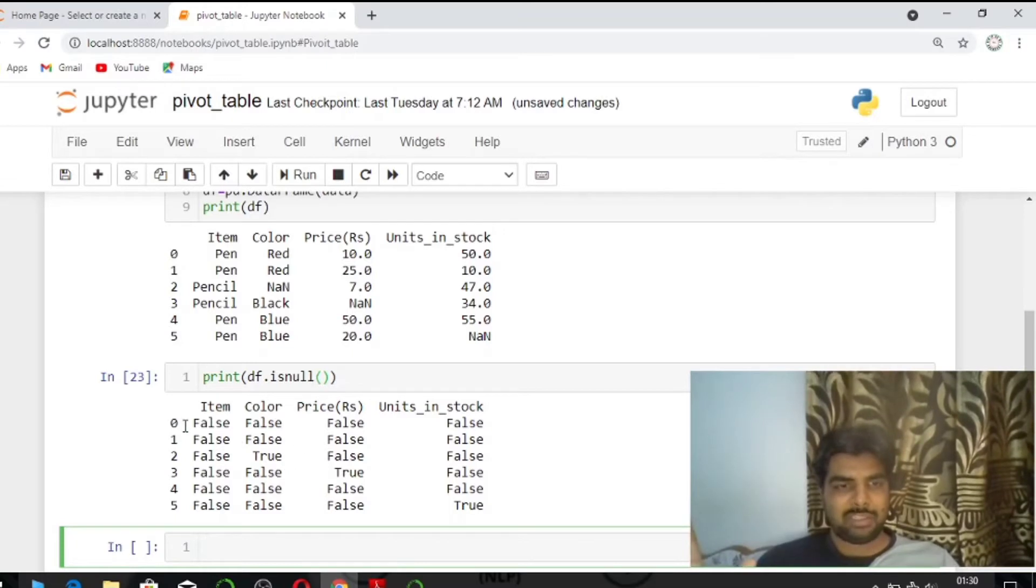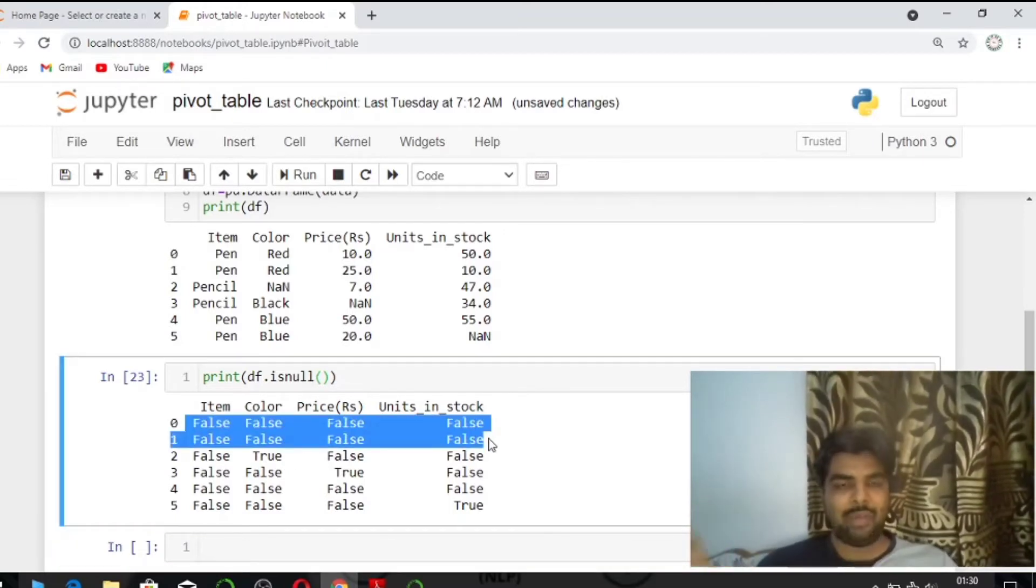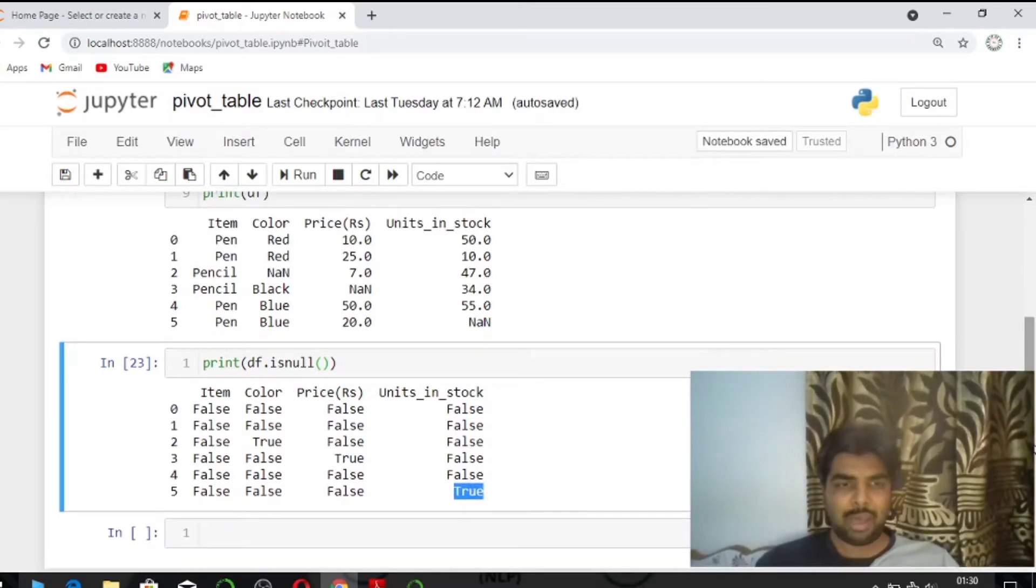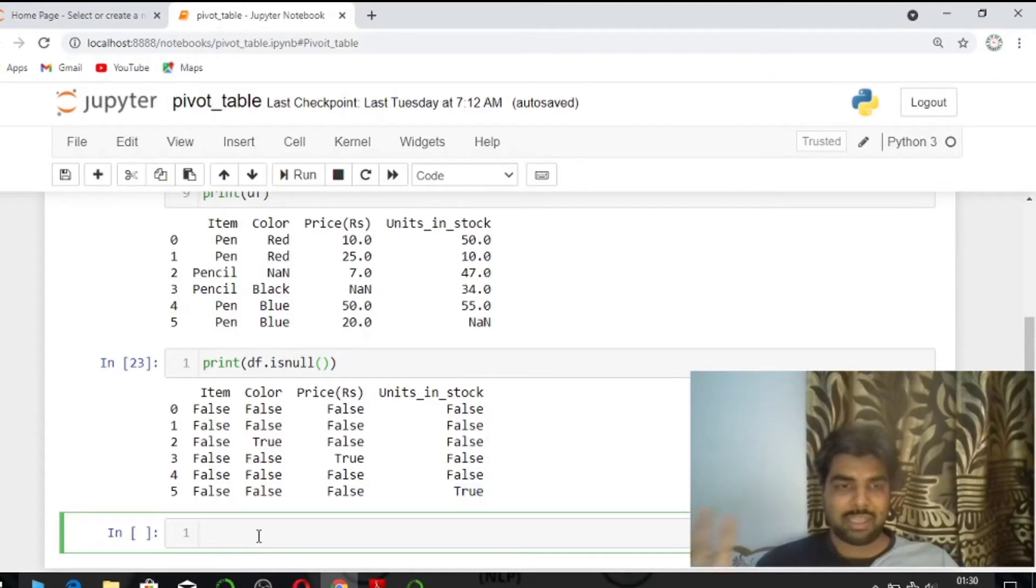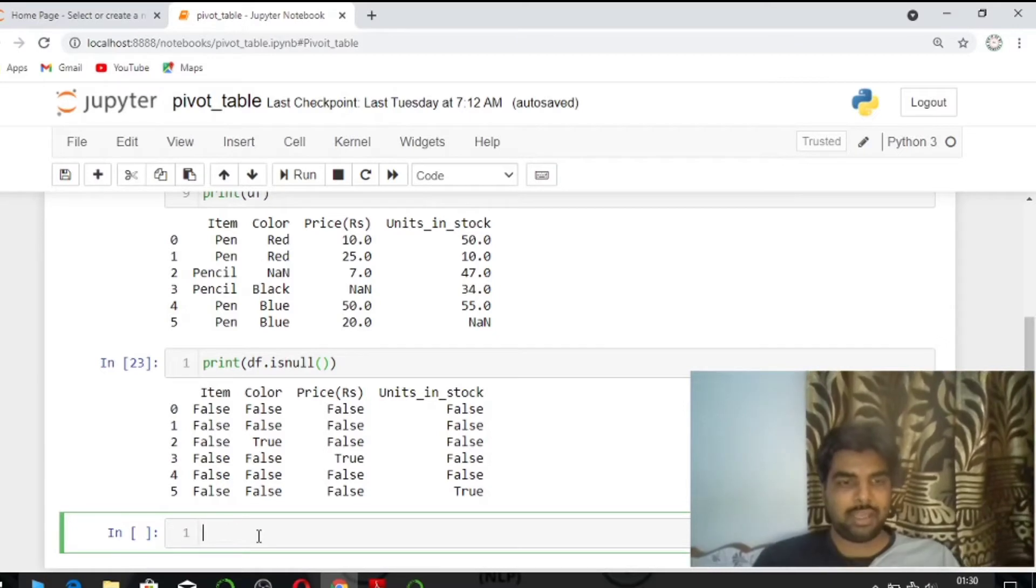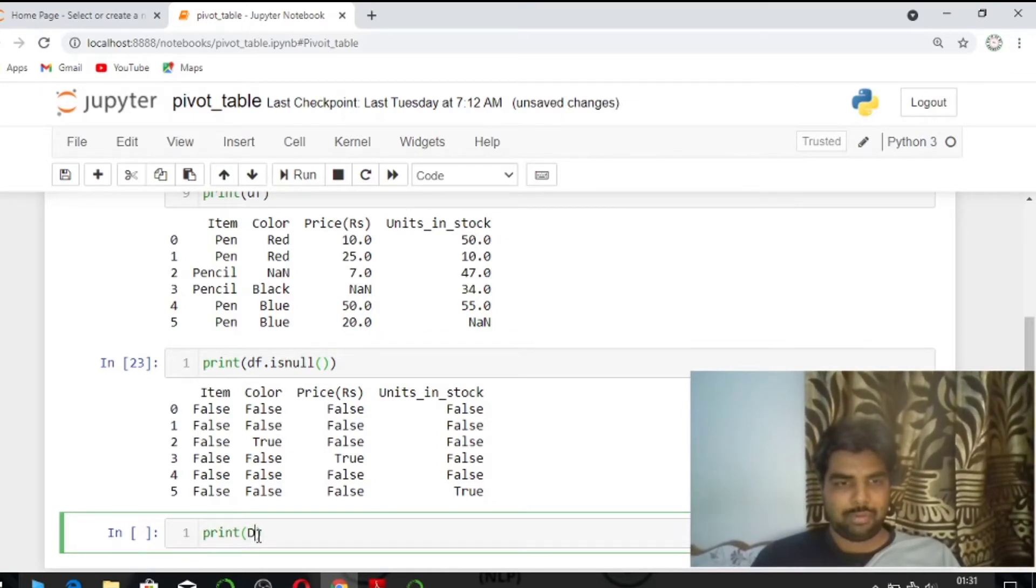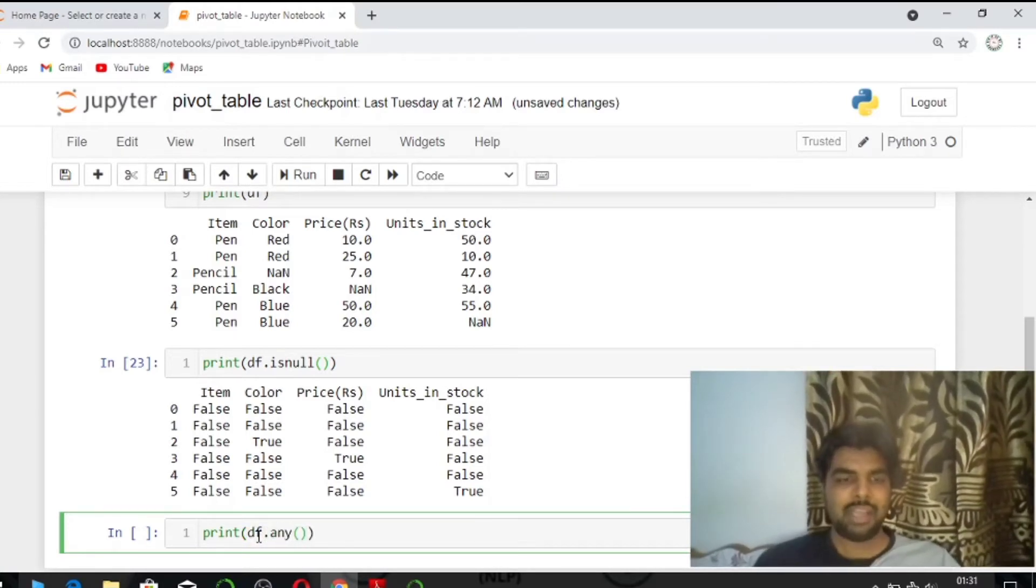When we print this data frame, NAN is represented at those places where no value exists. We can use is_null to check for missing values. This returns true or false values for each position in the dataframe.